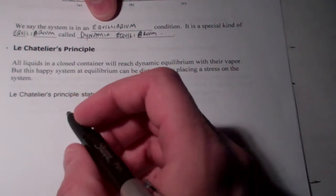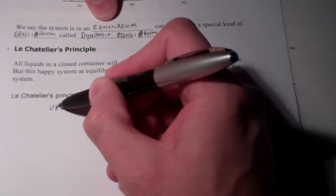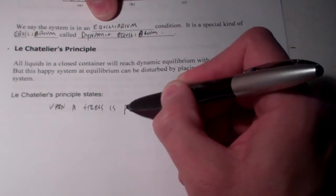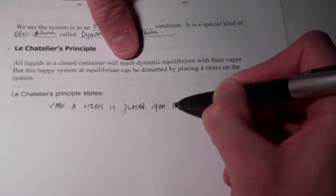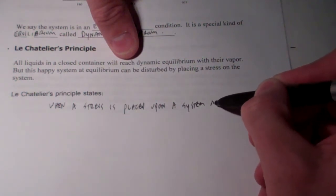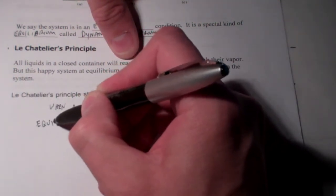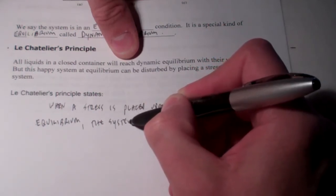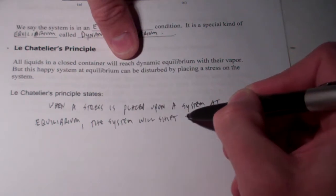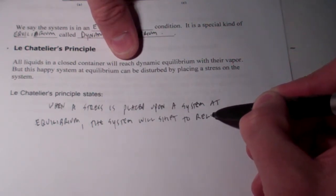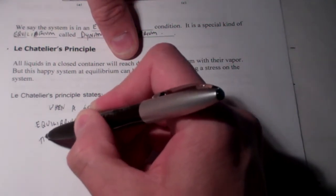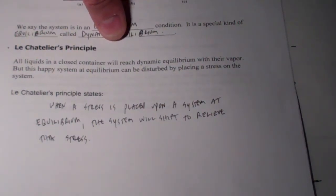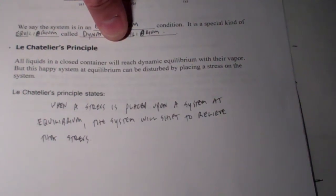Le Chatelier's Principle states the following: When a stress is placed upon a system at equilibrium, the system will shift to relieve that stress. What exactly does that mean?